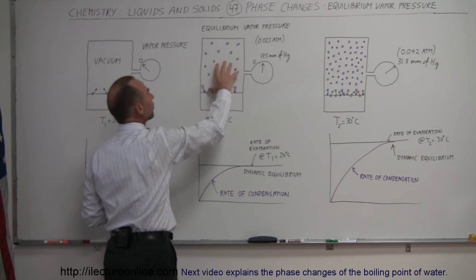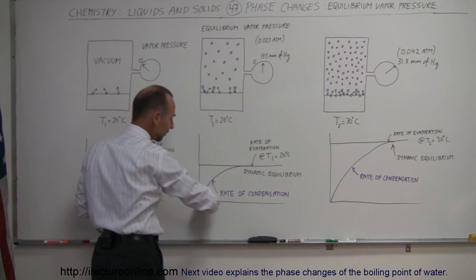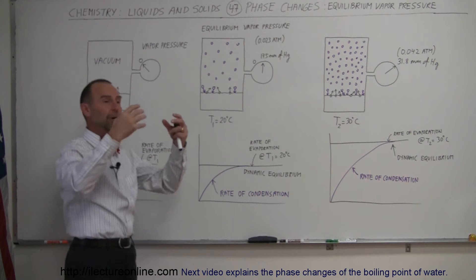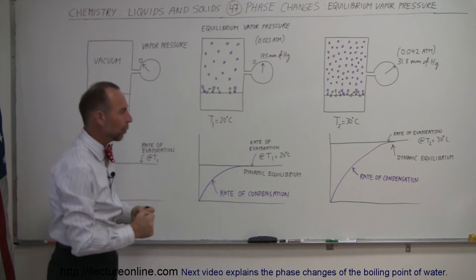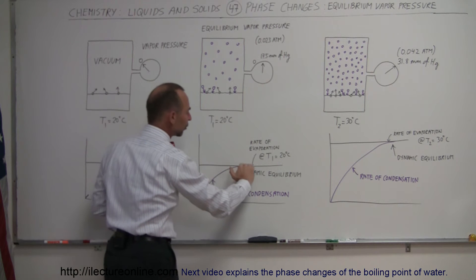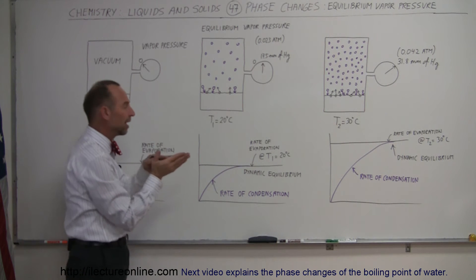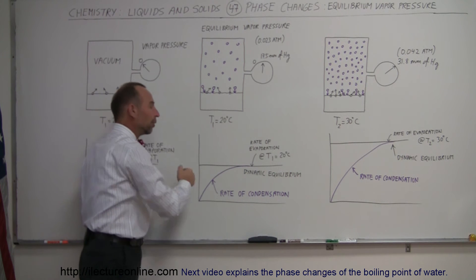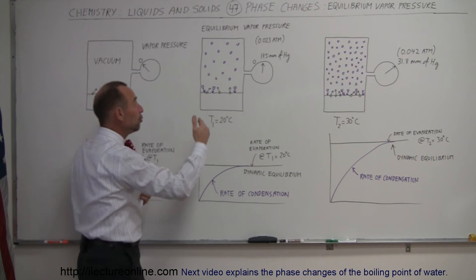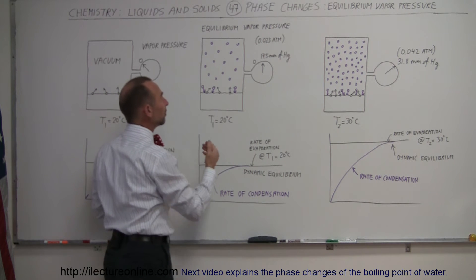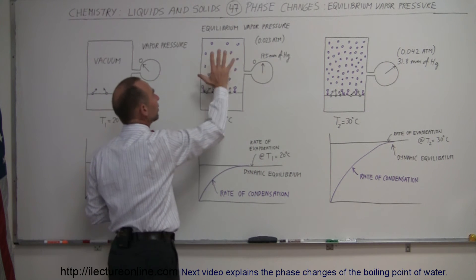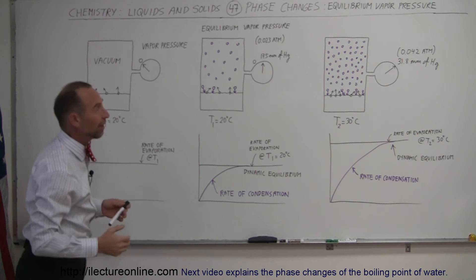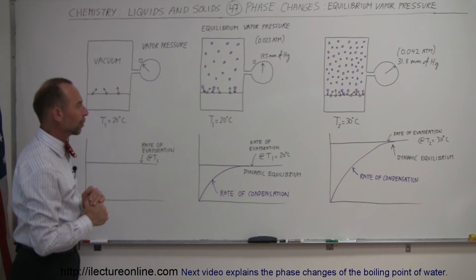As the amount of molecules increases in here, the rate of condensation will increase as well, and eventually the rate of condensation — the number of molecules per unit time that rejoin the water — will equal the number of molecules that evaporate. At that point, we say they have reached dynamic equilibrium, where the rate of evaporation equals the rate of condensation. At that point, no additional vapor molecules will be added to the container, and the vapor pressure will now be constant at 2.3 percent of atmospheric pressure, or 17.5 millimeters of mercury.